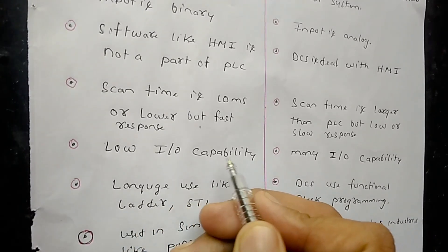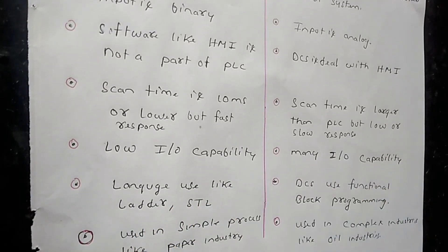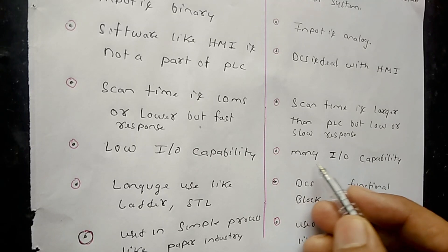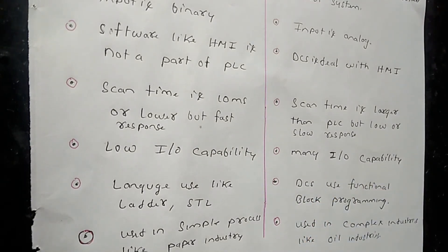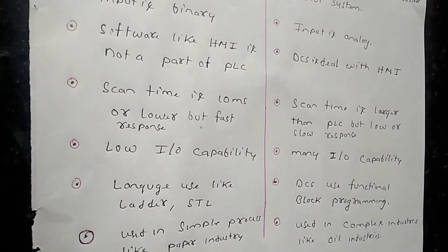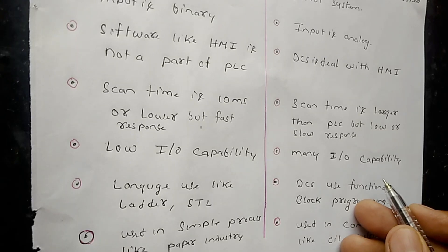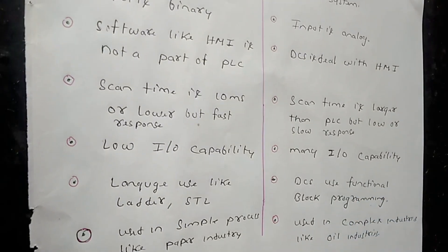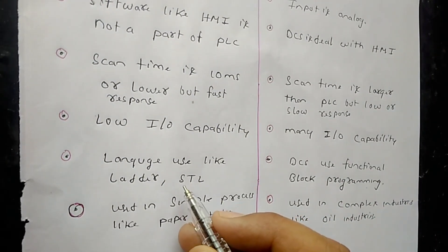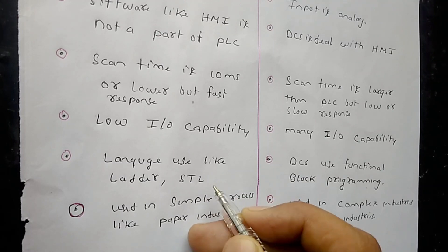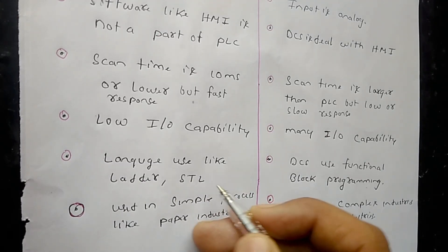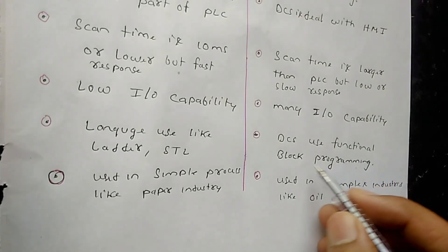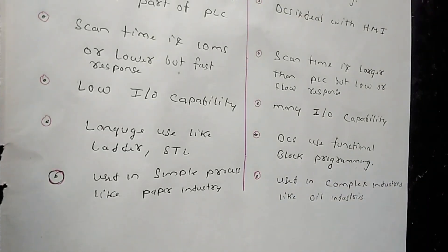The input-output capability of PLC is very low, while DCS has very high I/O capability — thousands and thousands of input-output points. In terms of programming languages, PLC uses ladder logic and STL (statement list), while DCS uses functional block programming.